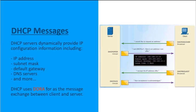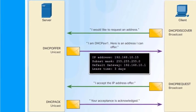DHCP is a powerful tool for easy dynamic addressing across networks, but it can also be exploited by malicious threat actors. DHCP servers dynamically provide IP addresses, subnet masks, default gateways, DNS servers, and more via DHCP options to clients. The typical DHCP conversation follows the DORA process: Discover, Offer, Request, Acknowledge.